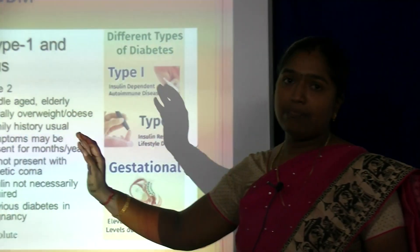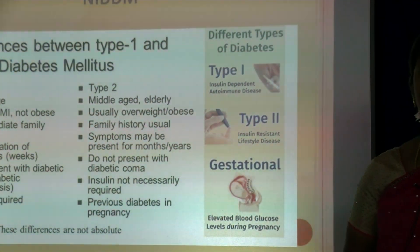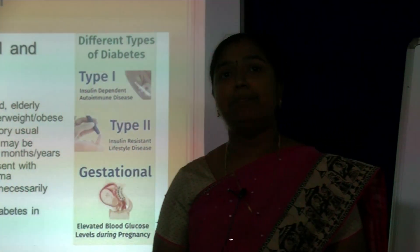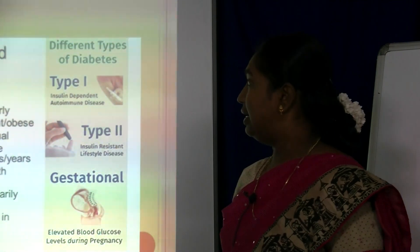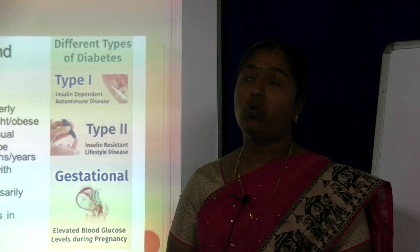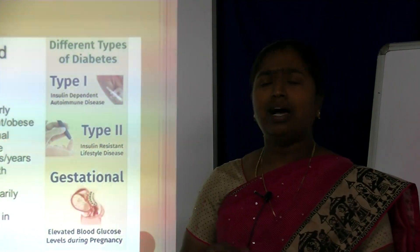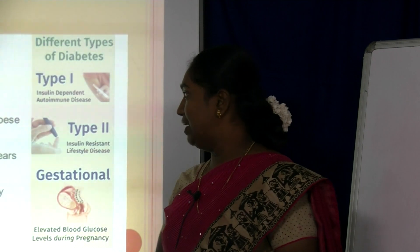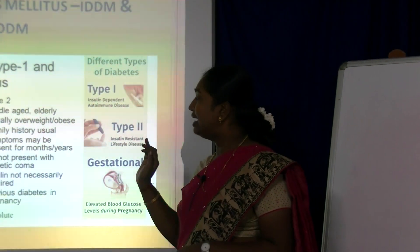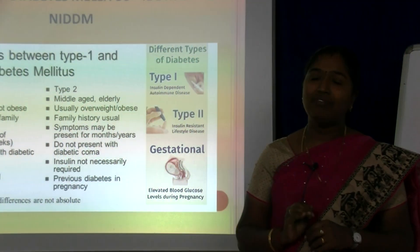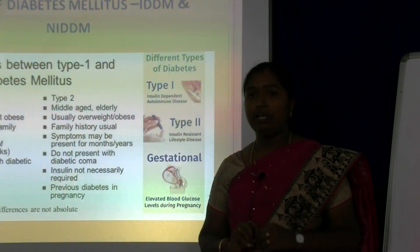Type 1 diabetes occurs at a younger age and is otherwise called IDDM — insulin-dependent diabetes mellitus, also called juvenile diabetes mellitus. Type 2 occurs in middle age or the elderly stage. In Type 1, children are usually underweight with a normal BMI, not obese. In Type 2, the adult or elderly person is usually overweight and obese. Type 1 does not have a family history, whereas Type 2 usually has a family history.